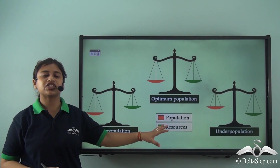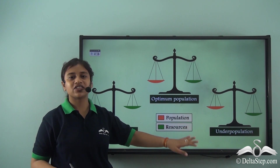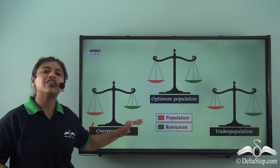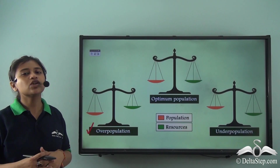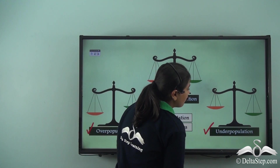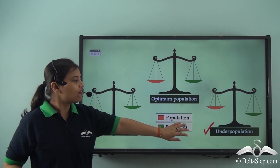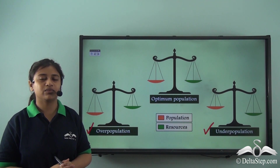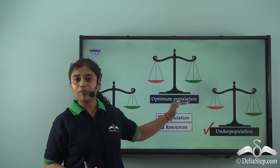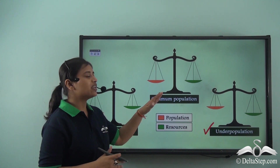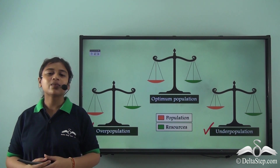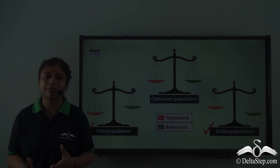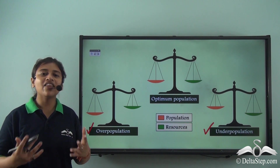To summarise, we have three situations reflecting the relationship between population and resources. First, overpopulation — where population is much more than the resources available. Second, underpopulation — where resources are more than enough for the small population, leading to under-utilisation. And finally, optimum population — where there is a good balance between population and resources. In this lesson we understood the positive and negative effects of population density, a very important aspect of population dynamics. In our next lesson we will learn more about other aspects of population dynamics.